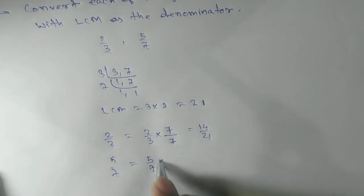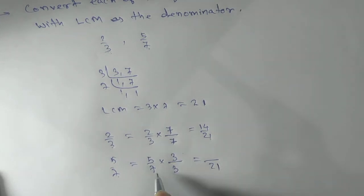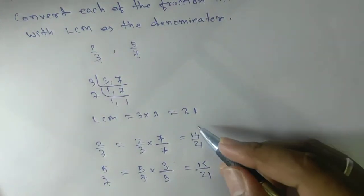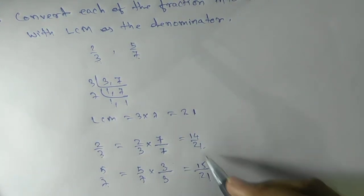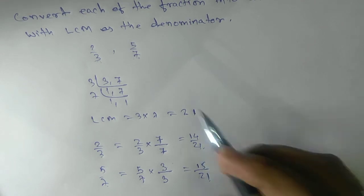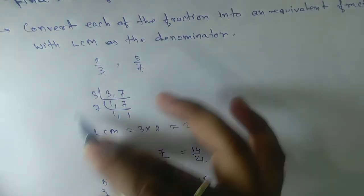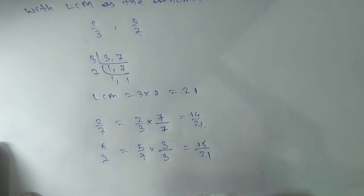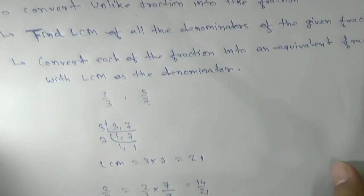Next, convert 5/7 into an equivalent fraction with denominator 21. What number multiplied by 7 gives 21? That's 3. So we multiply by 3/3, giving us 15/21. Now you can see that 14/21 and 15/21 have the same denominator — the unlike fractions have been converted into like fractions. We'll compare these in the next video. Thank you!